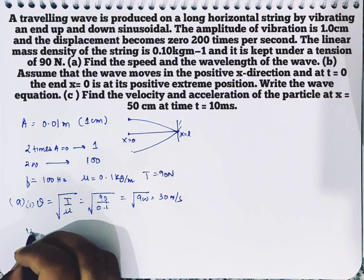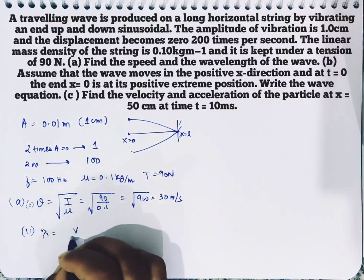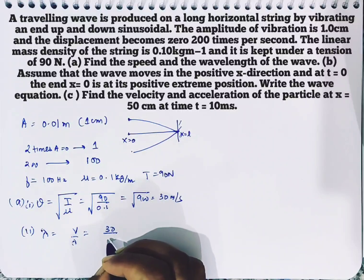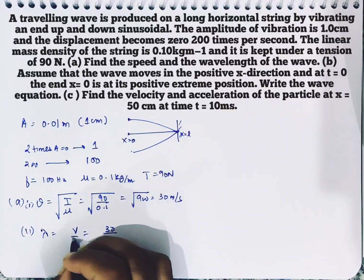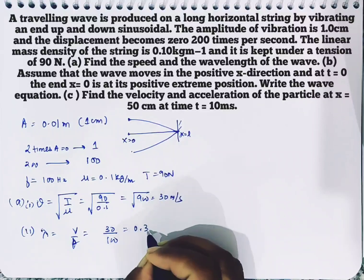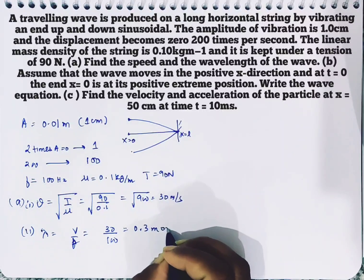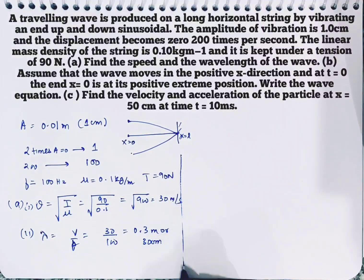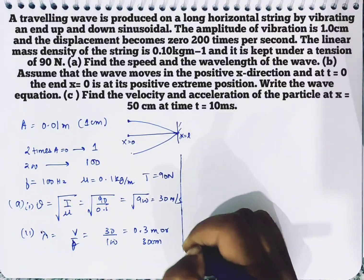Second part, we have to find the wavelength which is v by f. Velocity is 30 and frequency is 100. So the wavelength comes out to 0.3 meter or 30 cm.